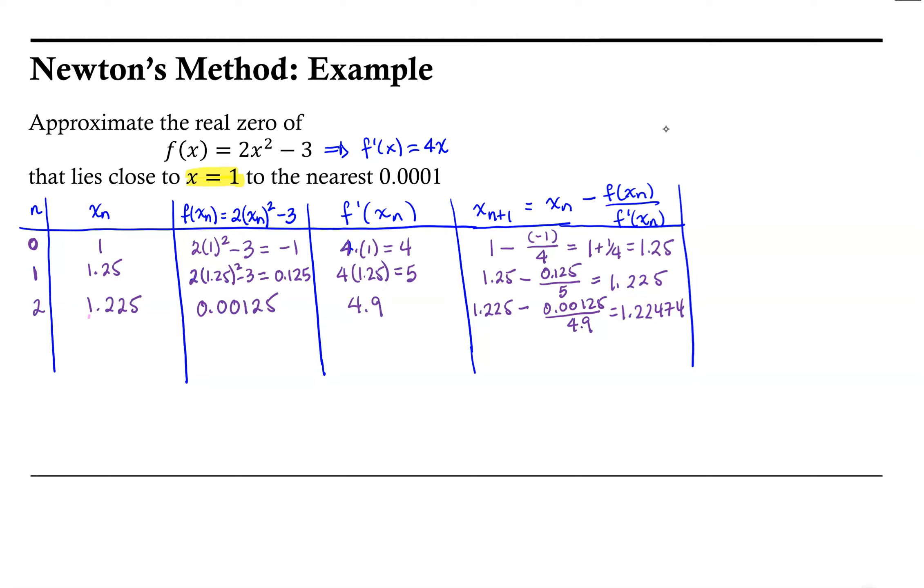So we had just found that x3 is 1.22474. And so we continue to evaluate our function. So f at 1.22474 is negative 0.00002.